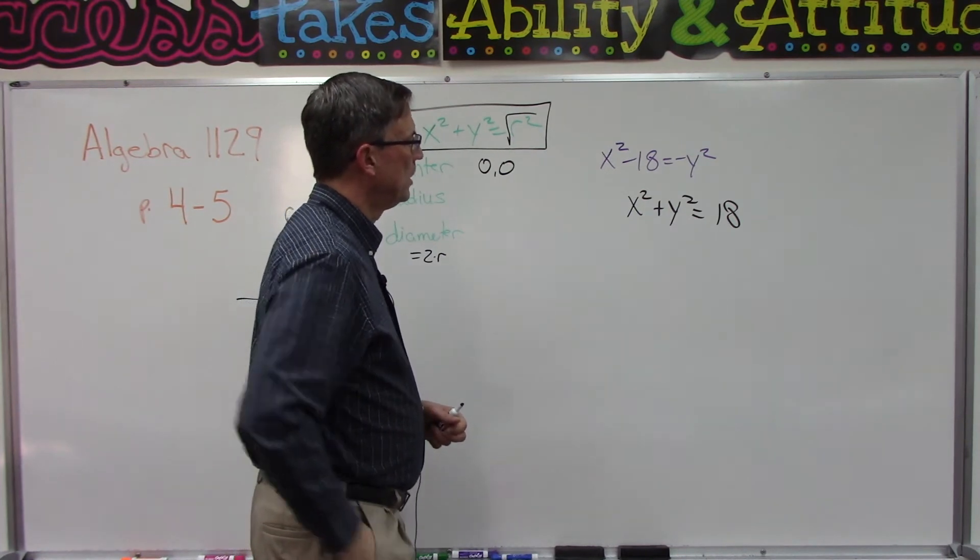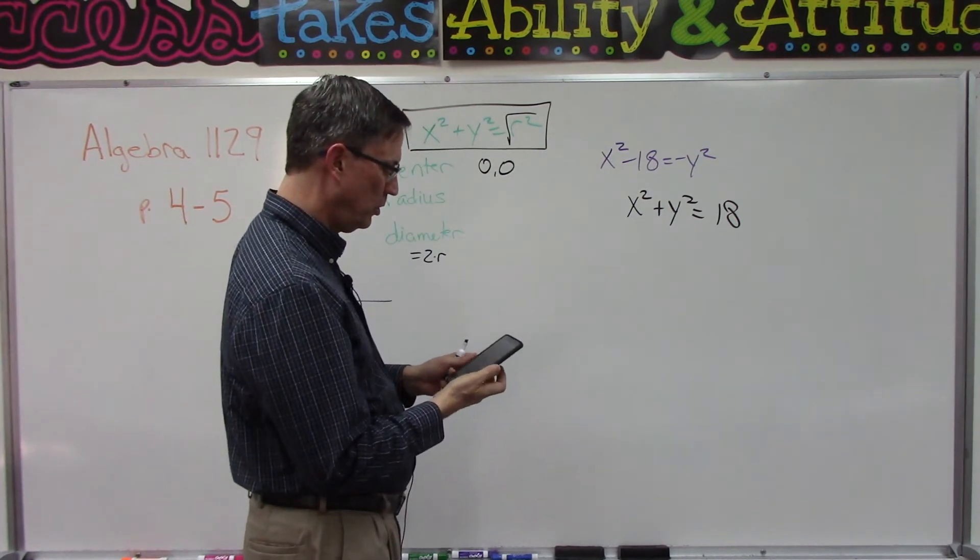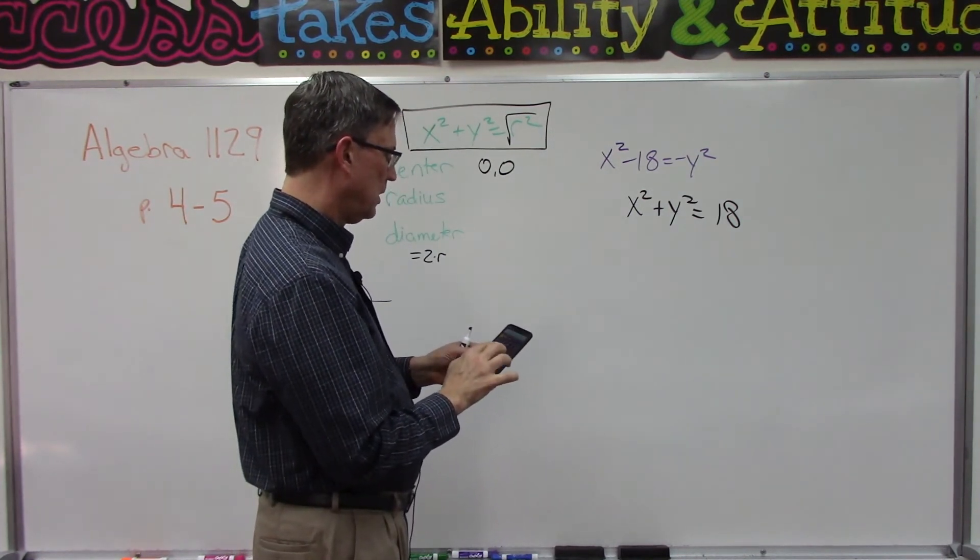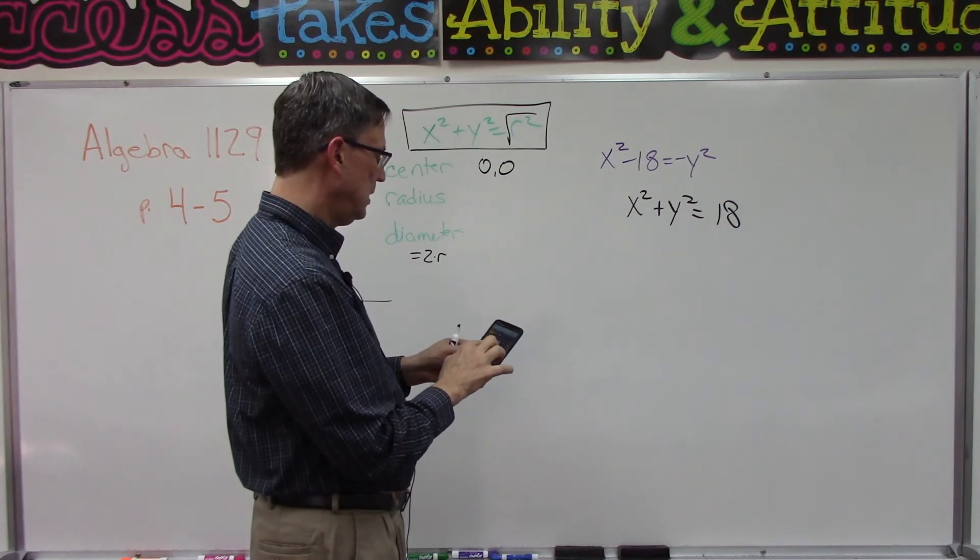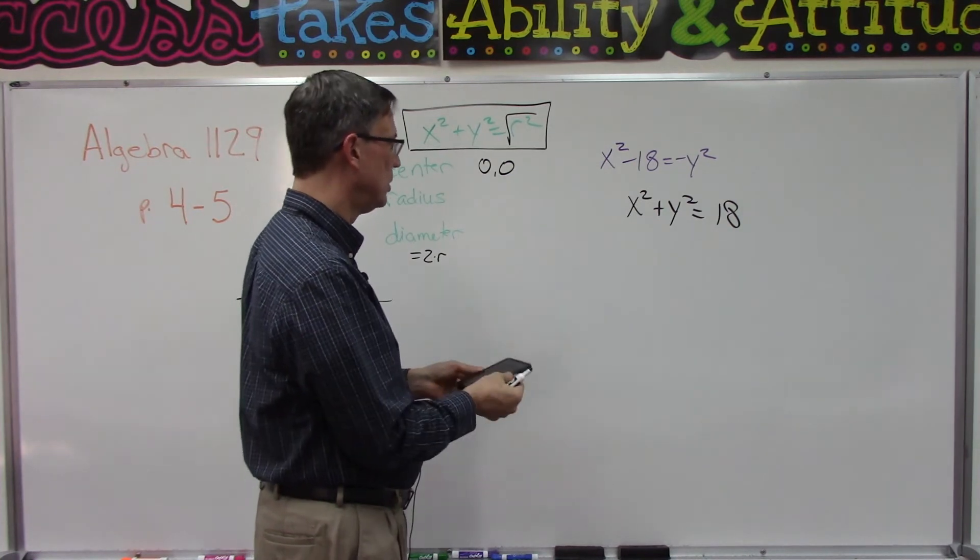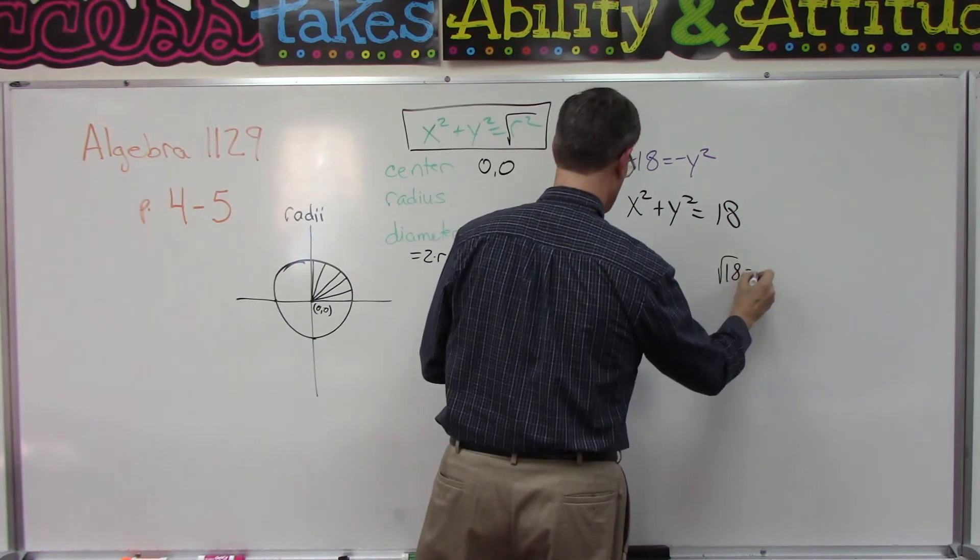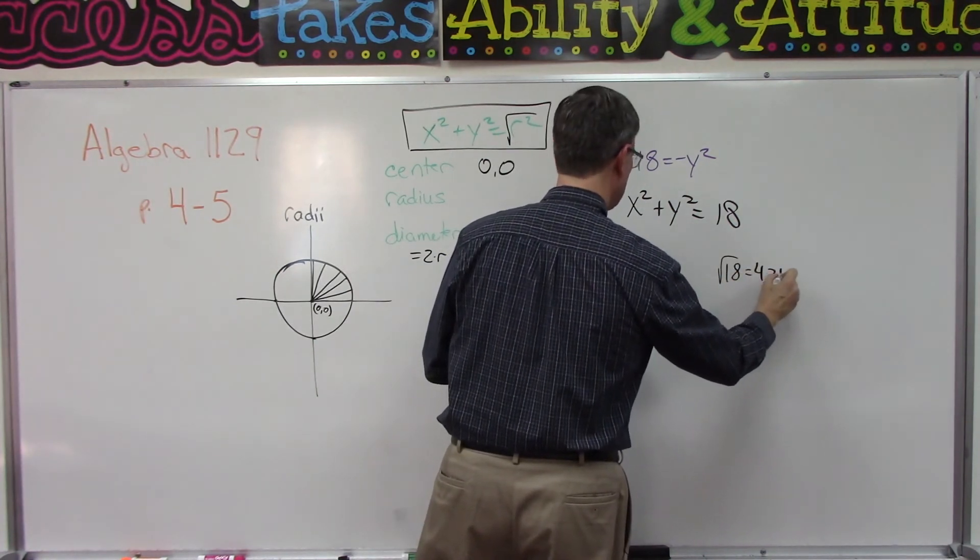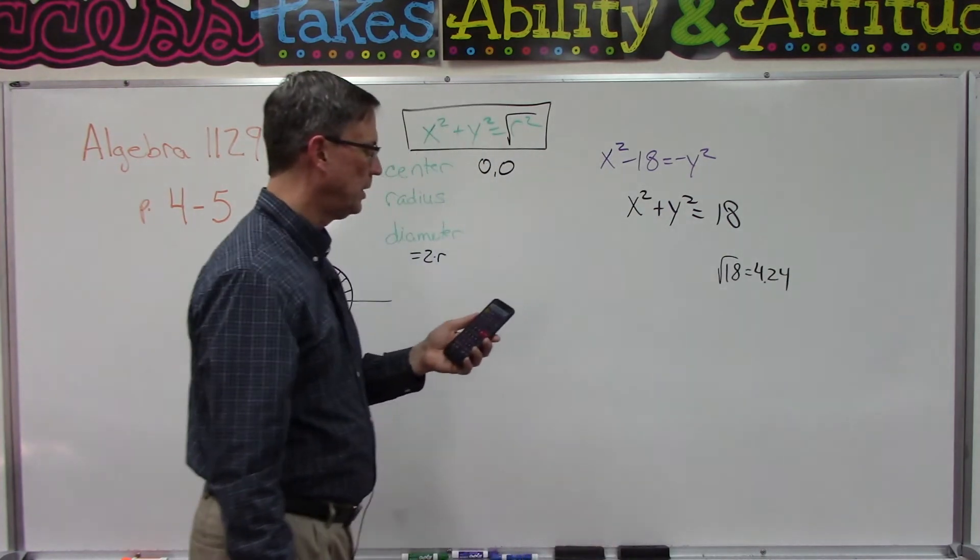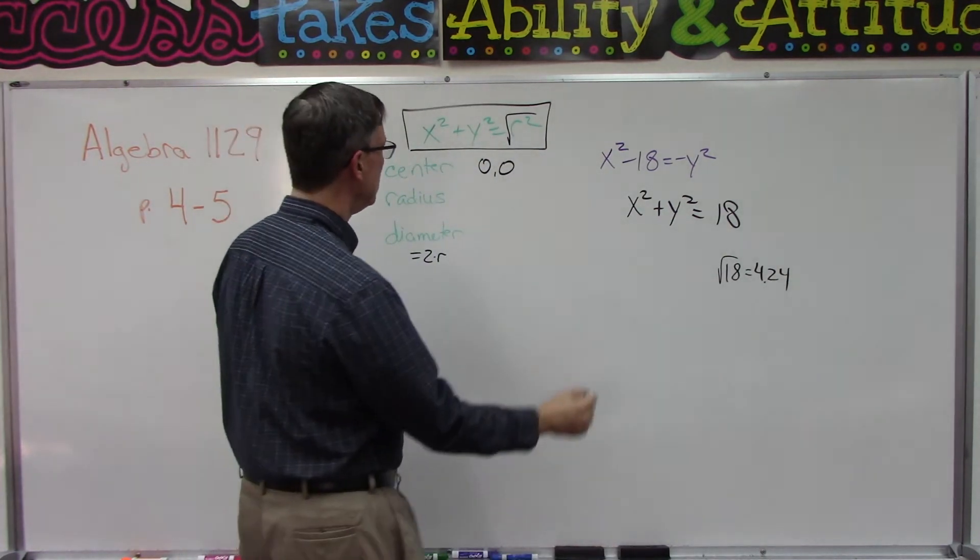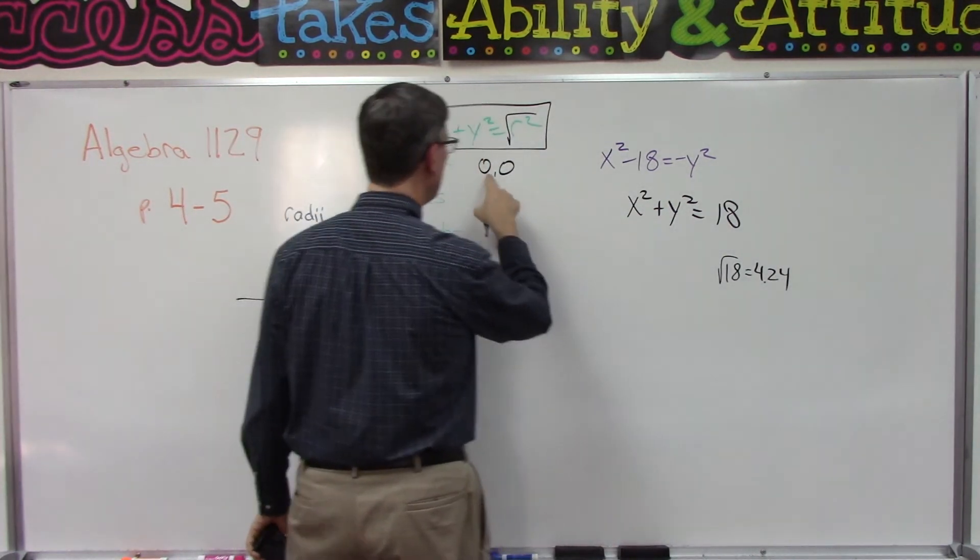Now let's get my calculator out, check this on yours as well. So if I plug in 18 and hit the square root, I get 4.24. Is that what you get?